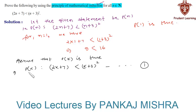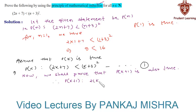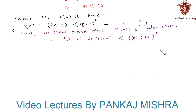Now in our last step we shall try to prove that P(k plus 1) is also true. We need to show that P(k plus 1) is such that twice of (k plus 1) plus 7 is less than (k plus 1 plus 3) whole square.